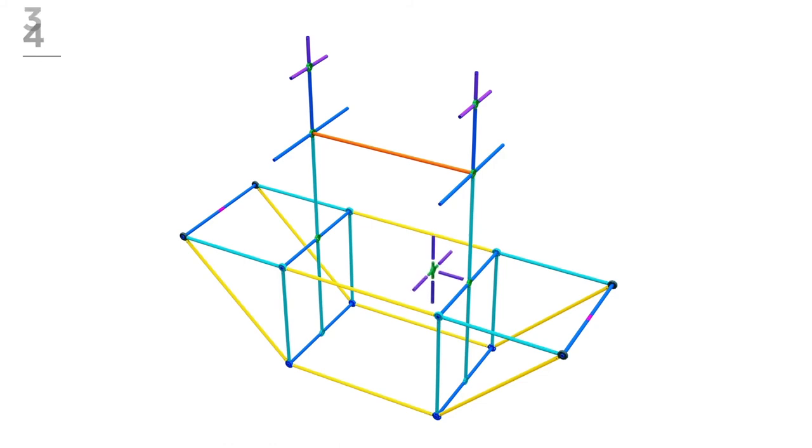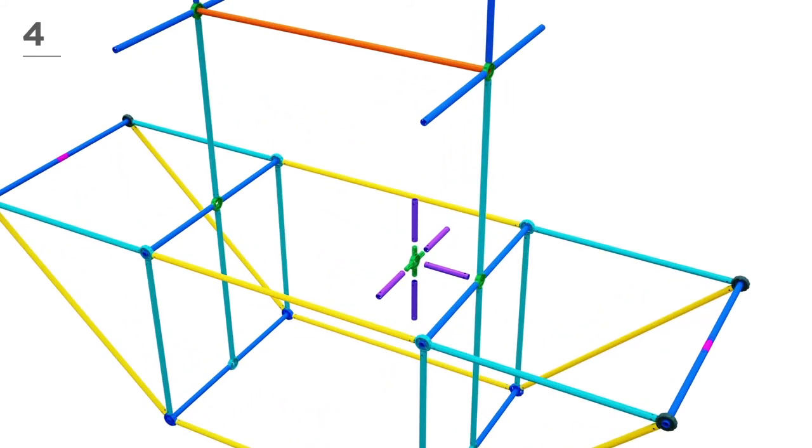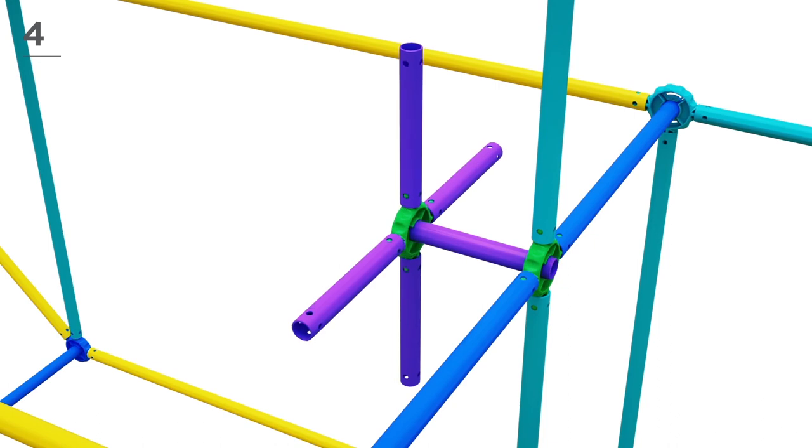It's looking great! Now, with 5 magenta poles and 1 green connector, snap-and-click the parts together like this.